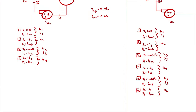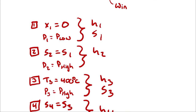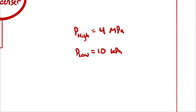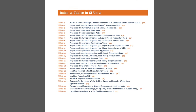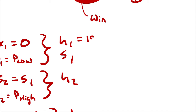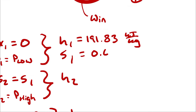At state 1, we look up H1 and S1 for a saturated liquid at 0.1 bar (10 kilopascals) from the saturated liquid tables by pressure. Reading off HF and SF, we get H1 equals 191.83 kJ/kg and S1 equals 0.6493 kJ/(kg·K).